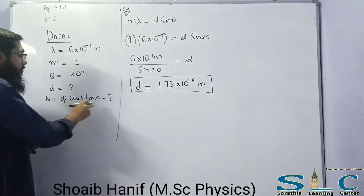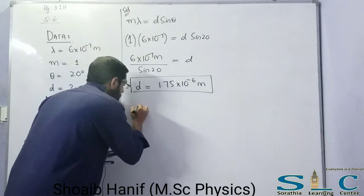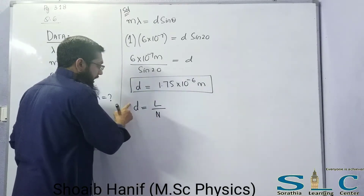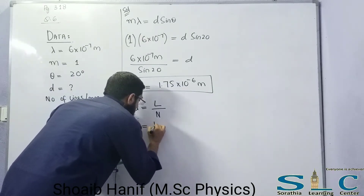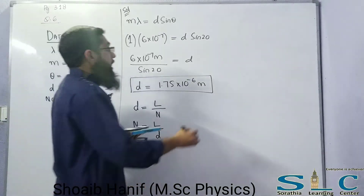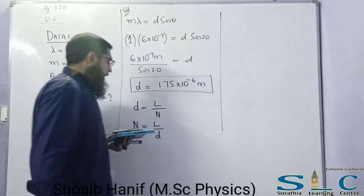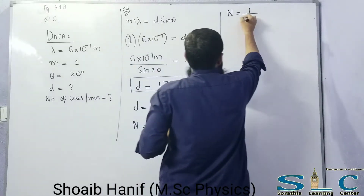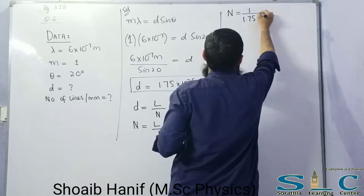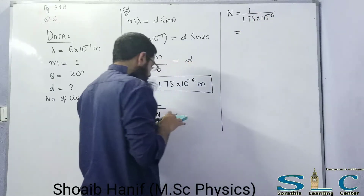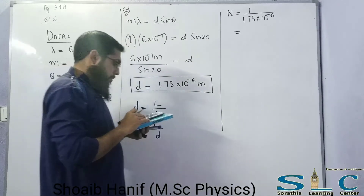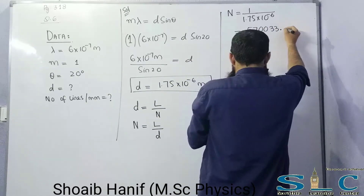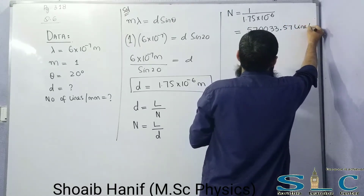Now we find the number of lines per millimeter. As we know, D = Length / Number of lines, so N = L / D. Using L = 1 meter, N = 1 / 1.75×10⁻⁶, which gives 570033.57 lines per meter.